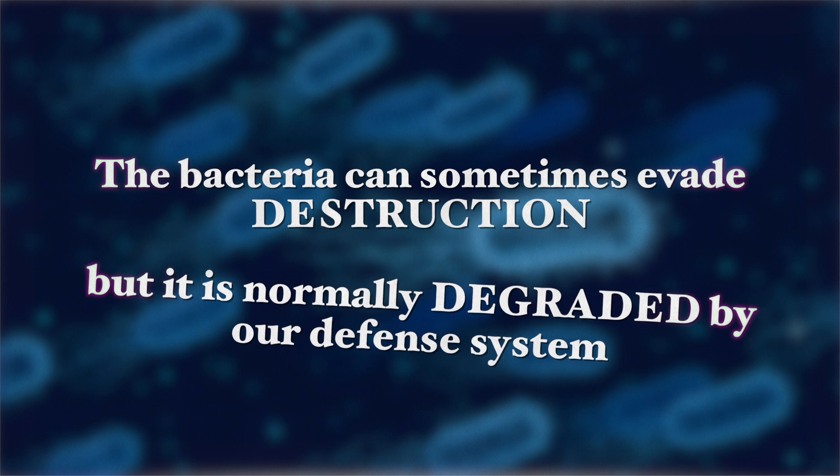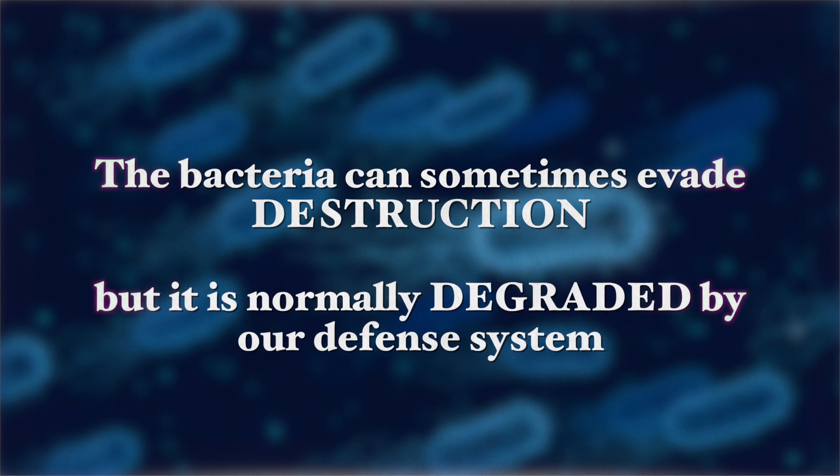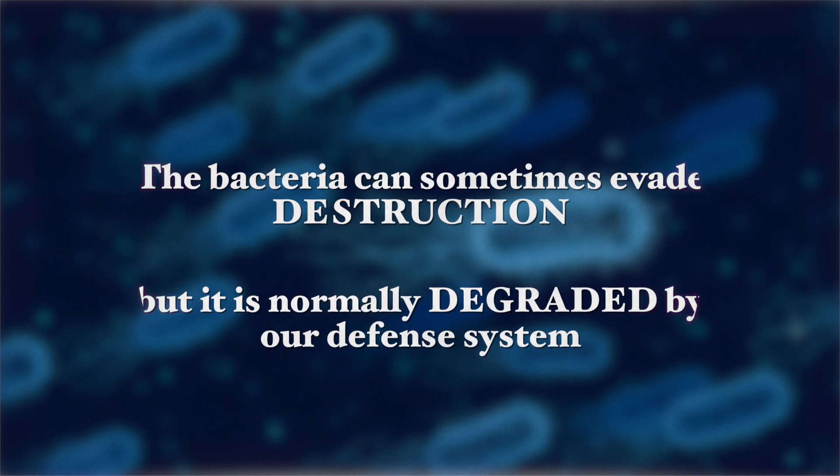Normally, the bacteria is degraded by our immune system. The endotoxins are then released from the bacterial cell wall and enter into our circulation, where they exert their damaging effects.